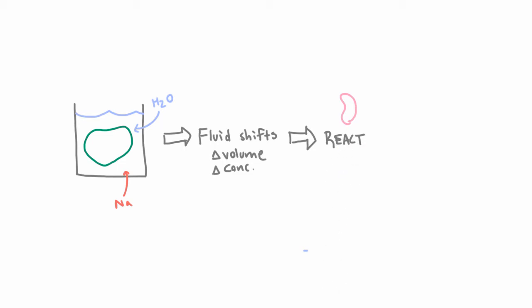The first step to understanding how the kidneys react is to understand that there's two different things that they can react to. The first is right here. It's a change in volume. So if there's a change in volume, the kidney can measure that, and then it can react to undo that. And it's important to specify that when we say volume, we mean specifically extracellular volume.